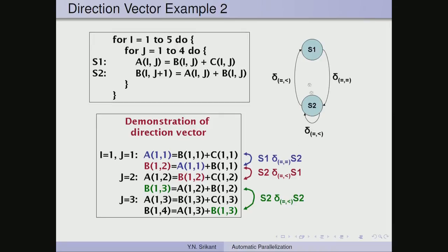In the dependence diagram: from S1 to S2 there is delta equal-equal; from S2 to S2 there is delta equal-less-than; and from S2 to S1 there is delta equal-less-than. These are the three dependences along with their direction vectors.